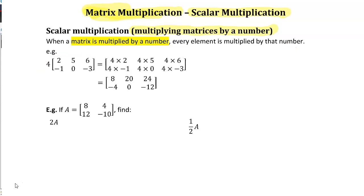Here's a worked example. I've got four times by that matrix — so four times each and every element within it. Four times two, four times five, four times six, four times negative one, four times zero, and four times negative three. You can see it's all in those same positions, giving us eight, twenty, twenty-four, negative four, zero, and negative twelve.